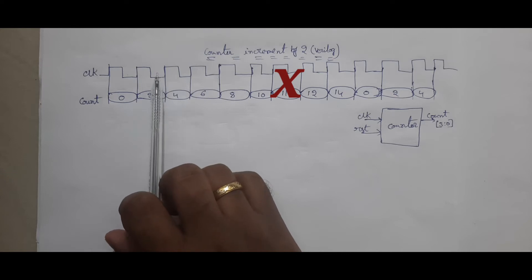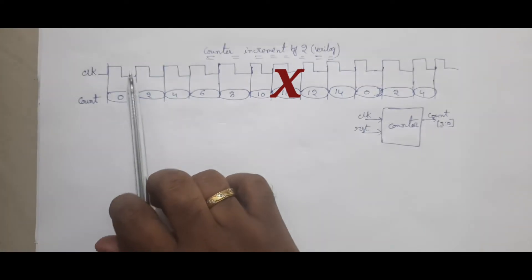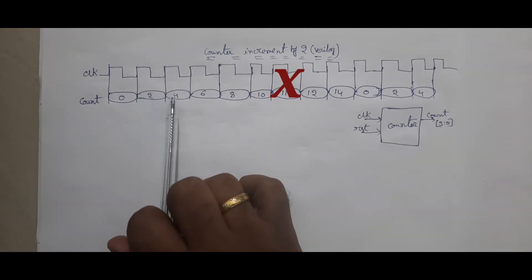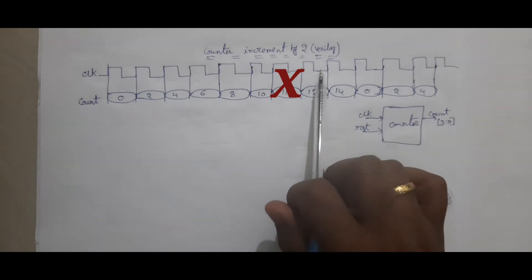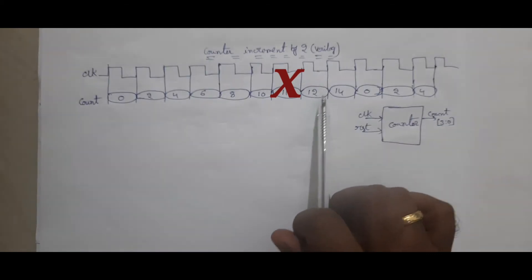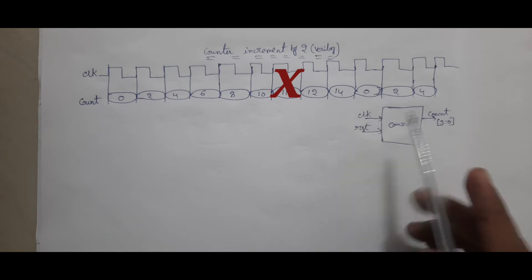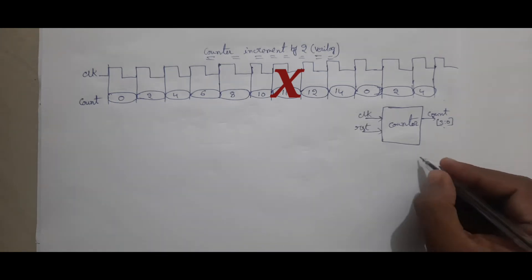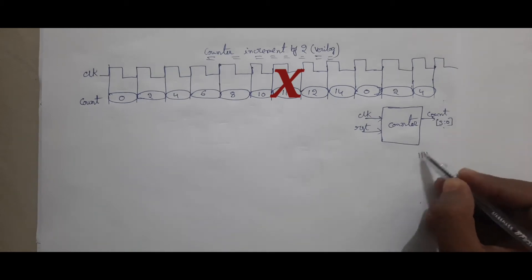How are you going to design that? The first clock value is 0, next clock it will be 2, next clock 4, next clock 6, next clock 8, next clock 10, next clock 12, then 14, after that 0. Why does it go to 0? Because my counter width is 3 to 0 — maximum value is four 1s, that is the maximum value in 4 bits.